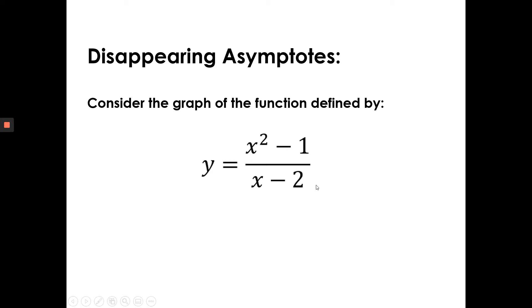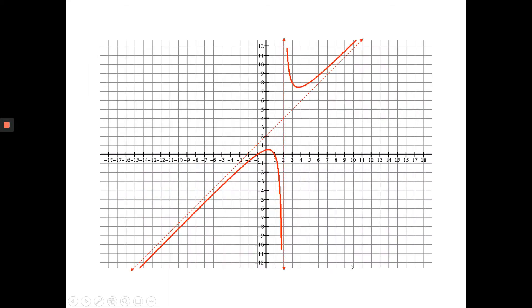But you know what it does have? It has a vertical asymptote of x equals 2. So I'm going to show you this graph in the next slide. Perfect, right here. So this graph is a graph of f of x equals x squared minus 1 all over x minus 2. All right? So beautiful graph.